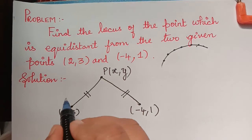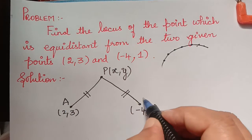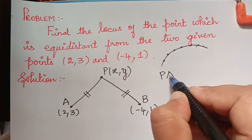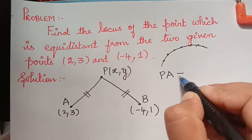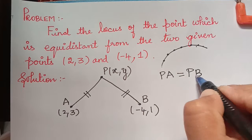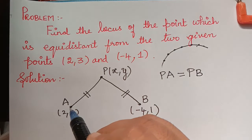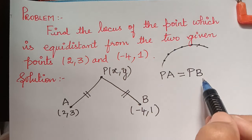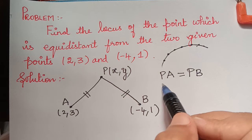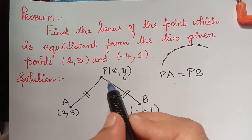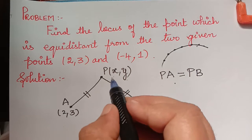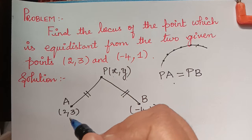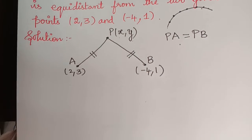Let us call the point (2, 3) as A and the point (-4, 1) as B. It is given that distance PA equals distance PB, because point P is equidistant from these two points. Now by using the distance formula, we find PA: the coordinates are (x, y) and (2, 3).